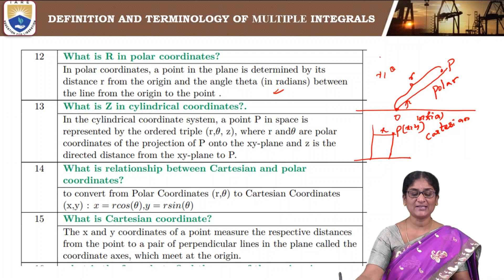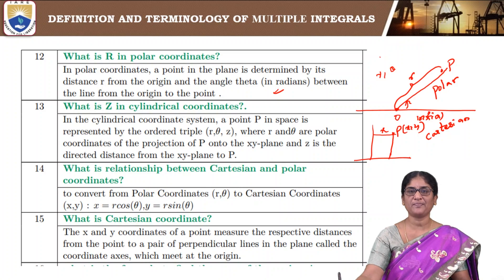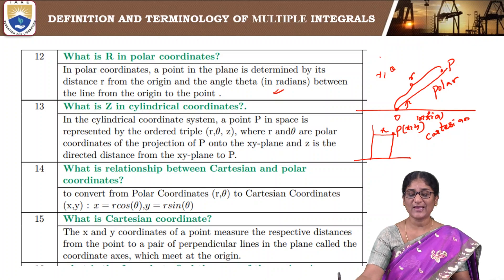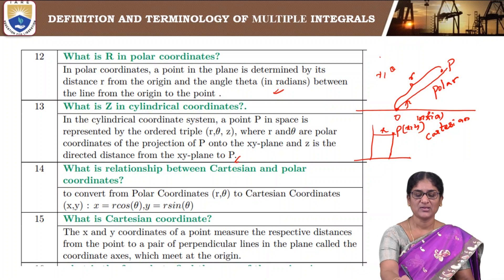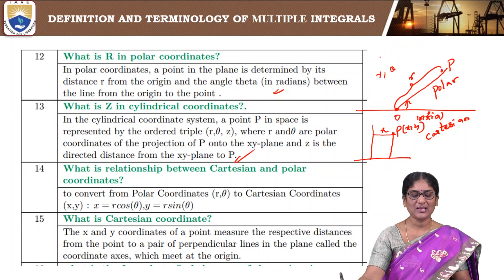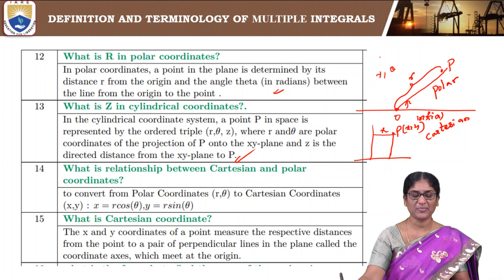What is z in cylindrical coordinate systems? In a cylindrical coordinate system, a point in space is represented by the ordered triple (R, theta, z), where R and theta are the polar coordinates of the projection of point P onto the xy-plane, and z is the directed distance from the xy-plane to the point P.